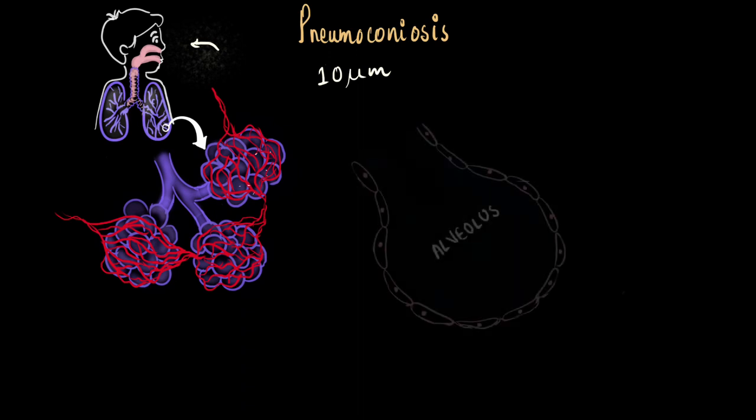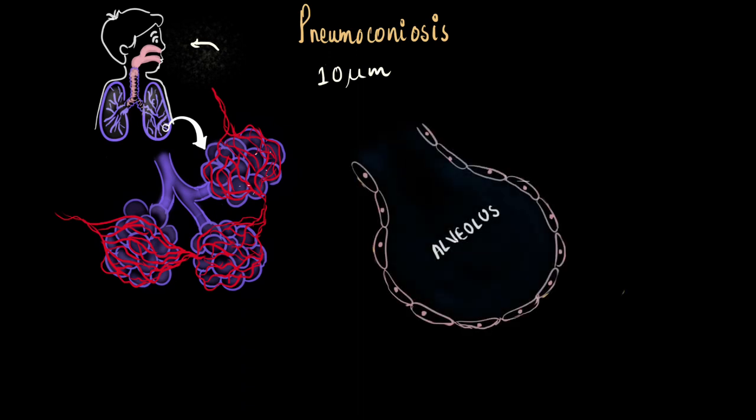Once they enter the alveolus, they will have to face the immune cells present there. So let's just write IC for immune cells that are present there. These are the immune cells. These are the dust particles that entered. Now the immune cells will initially tackle the dust that has entered the alveolus.